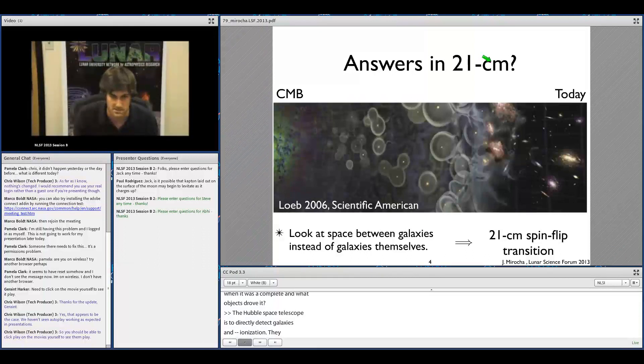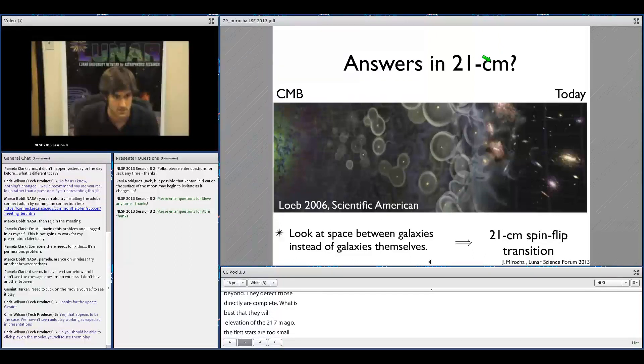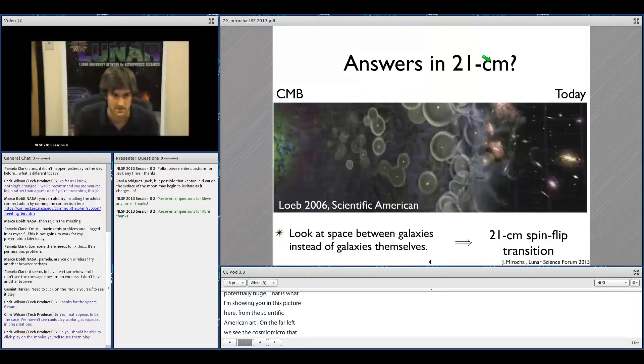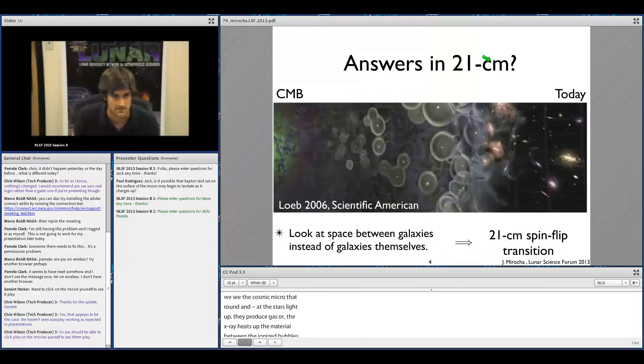And so that's one of the motivations of the 21-centimeter signal. While the first stars themselves are too small to detect directly, their impact on the intergalactic medium is potentially huge. I'm showing you this cartoon picture from a Scientific American article by Avi Loeb. On the far left we see the cosmic microwave background radiation. And then as the first stars light up, they produce these ionized bubbles of gas around them.